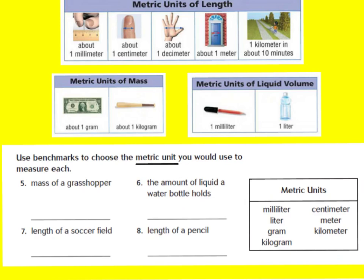Now we're going to talk about the metric system. In other countries they use the metric system, while here in America we use customary units — but sometimes we use metric here too, so it's very important to learn. One millimeter is very, very small. If you look at your ruler on the centimeter side, between one centimeter and the next you'll see about ten tiny millimeter lines — that's the size of a millimeter. One centimeter is about the width of your fingertip.